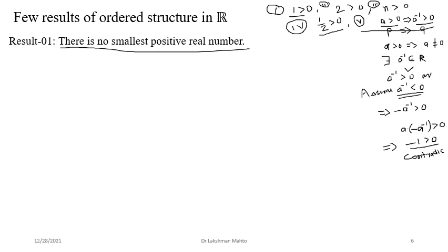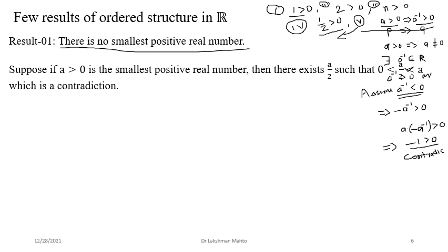So if you take any positive real number, its multiplicative inverse is also positive. From Result 5: since 2 is positive, its inverse 1/2 is also positive — so 1/2 > 0. Now using this, let's prove there is no smallest positive real number. The proof technique should be clear from how we established the previous results.